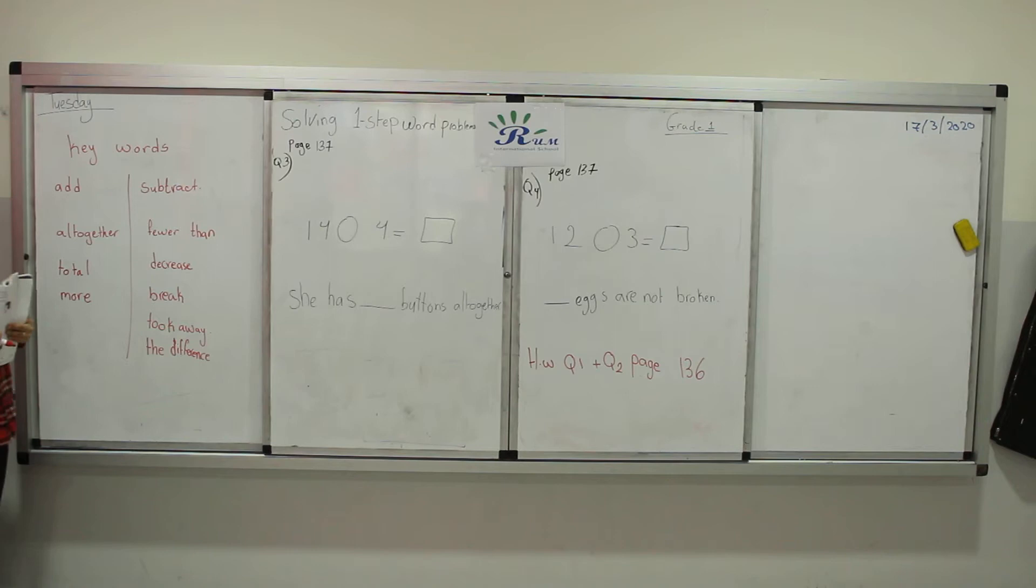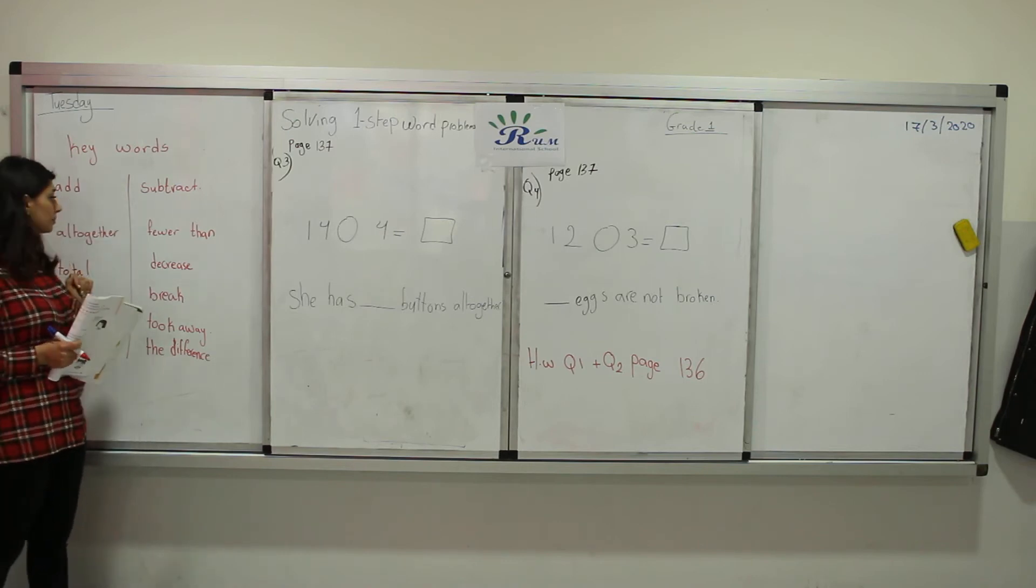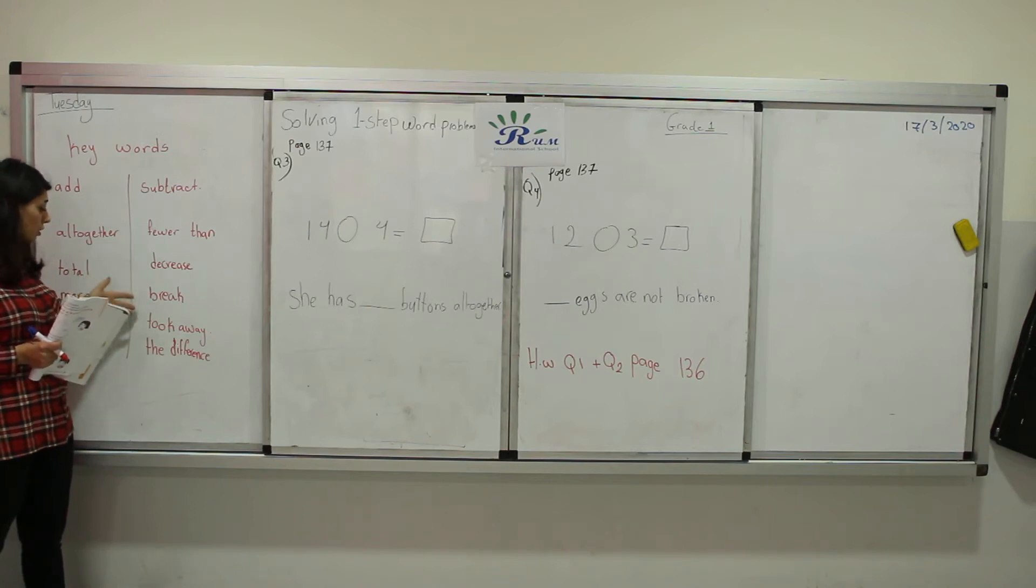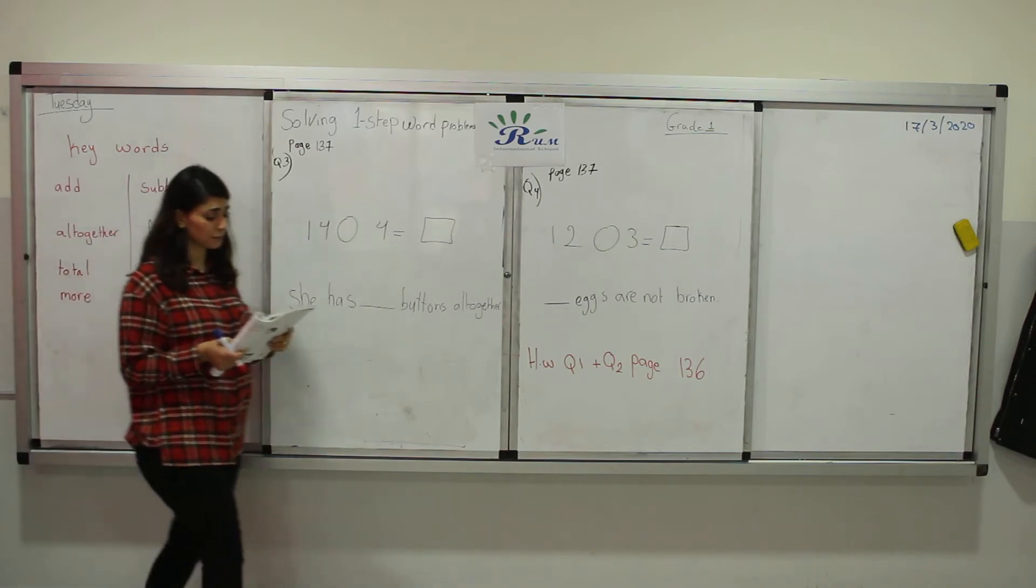The keywords to add are altogether, total, more, or we can find another keyword. Keywords for subtraction are fewer than, decreased, break, took away, the difference, or too many other examples.